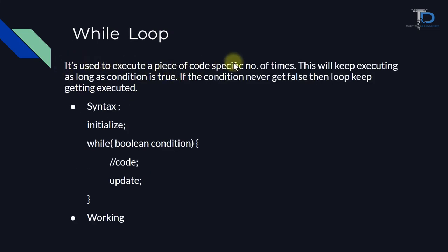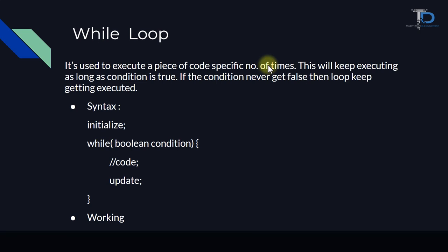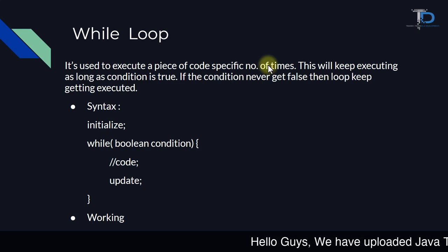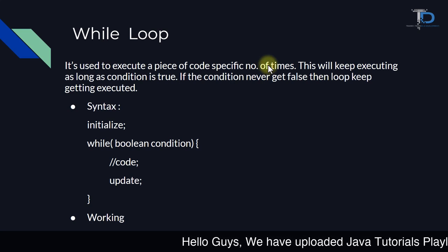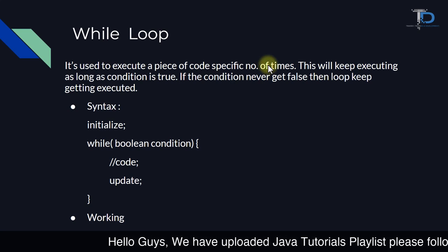It is used to execute a piece of code a specific number of times. While loop is used — basically any loop, whether it's do, while, or for — the use is that we can run a specific number of times.